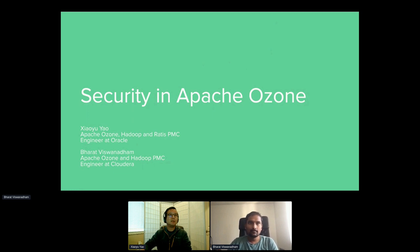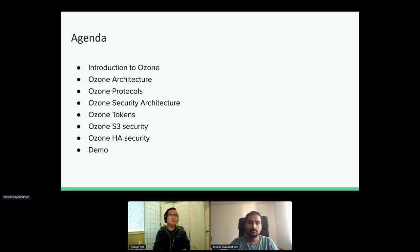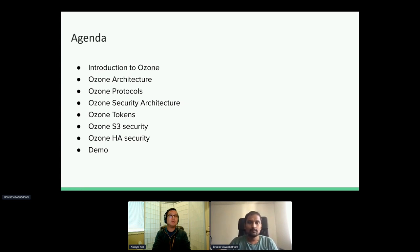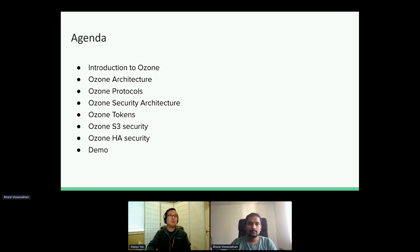We are also BMC for Ratis as well. Looking at the agenda of today's talk: I will cover the first half about Ozone architecture, the Ozone protocols, and how we secure the Ozone protocols with security mechanisms such as Kerberos delegation tokens. Then Brad is going to cover S3 security and how Ozone is secured with a similar mechanism but with some different implementations. At the end, we'll give some demos for how to secure Ozone clusters.